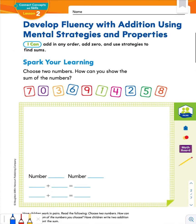Let's turn to page 9 in our workbook. Our first Spark Your Learning problem says choose two numbers. Let's choose 6 and 8 today. It says: how can you show the sum of the numbers you choose? We learned in the previous lesson that the sum is the answer when two numbers are added together. Then it says: let's write two addition facts to represent the sum. The numbers we chose are 6 and 8.